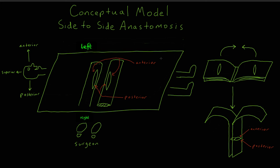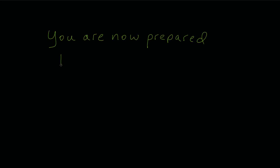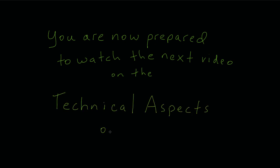Take the time to understand this conceptual model before proceeding. Being able to make cognitive sense of the anatomic orientation of the anastomosis — in particular the anterior and posterior relationships of the enterotomies — is critical to performing a successful technical anastomosis. And that concludes our discussion of the cognitive aspects of the hand-sewn two-layer bowel anastomosis. You are now ready to proceed to the second part of our series, the technical aspects of the hand-sewn two-layer bowel anastomosis.